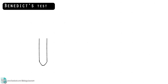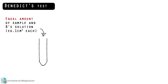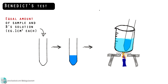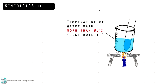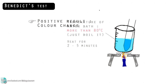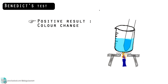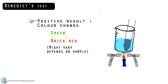First, add equal amounts of sample and Benedict's solution into a test tube. Shake to mix the solutions and then place the test tube into a water bath. Make sure the water bath is more than 80 degrees Celsius — a boiling water bath is good for the test. Heat the solution for 2–5 minutes. The initial blue coloration of the mixture will turn green, then yellowish, and may finally form a brick-red precipitate.